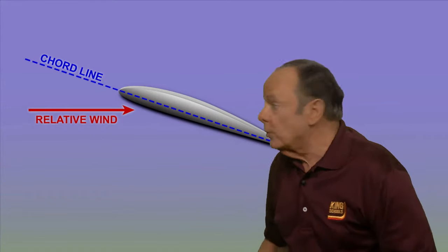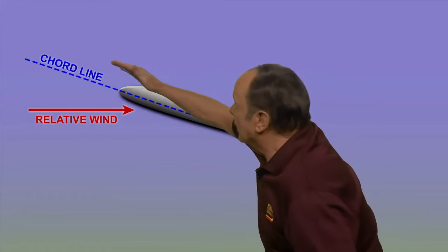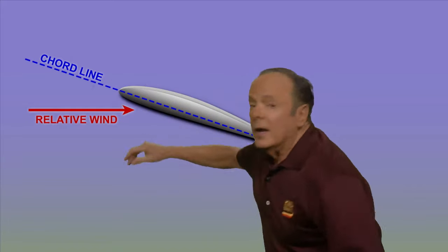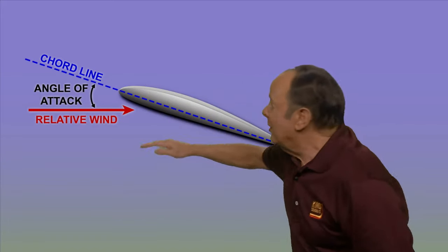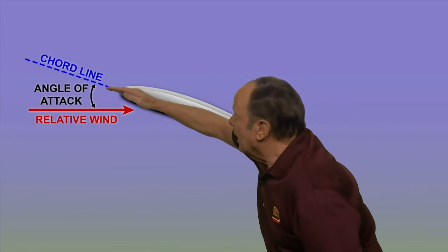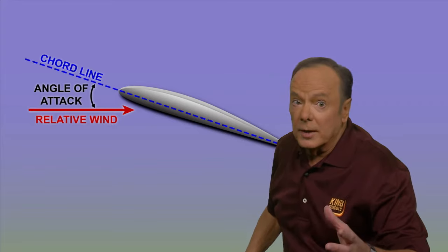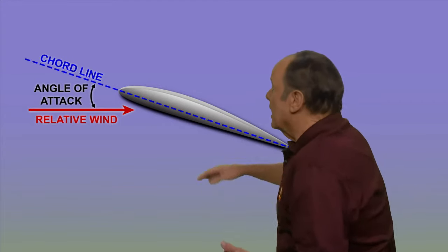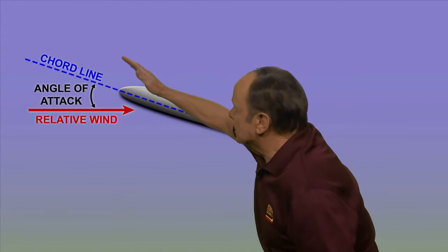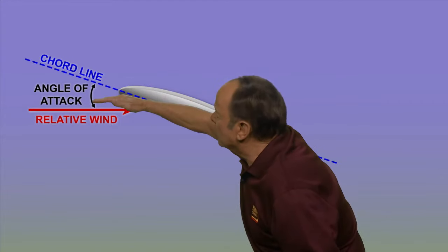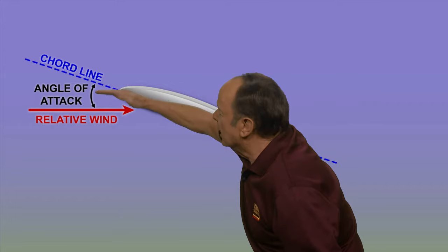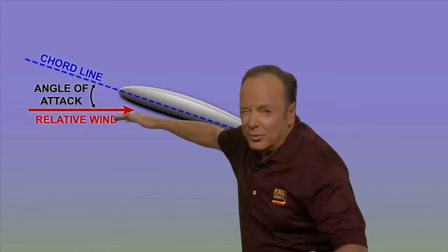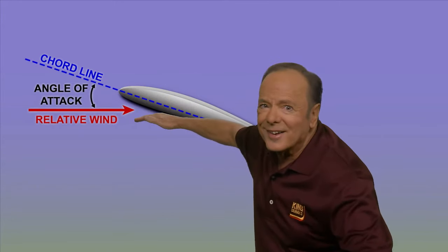This angle between the chord line of the wing and the relative wind is called the angle of attack. The FAA wants you to know that, and they sometimes refer to this angle of attack as an acute angle because it's less than 90 degrees. So this acute angle is called the angle of attack.